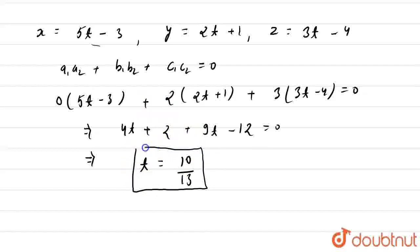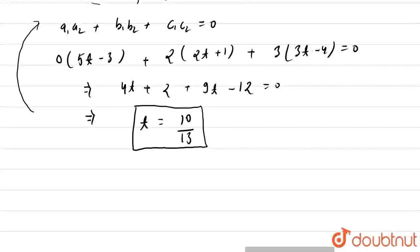So now if we put the value t = 10/13 in our coordinates x = 5t - 3, y = 2t + 1, and z = 3t - 4, we get our value.